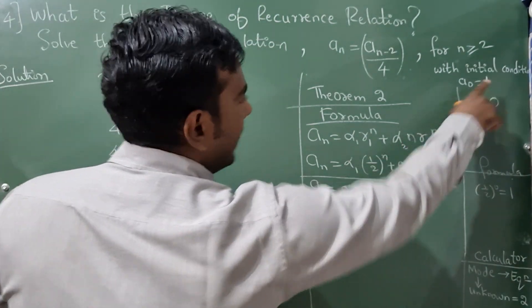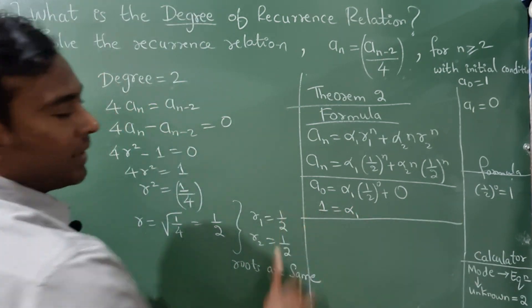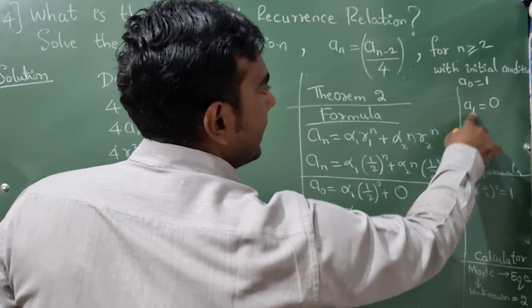Now what is a_0 value? It is 1. So α₁ = 1.